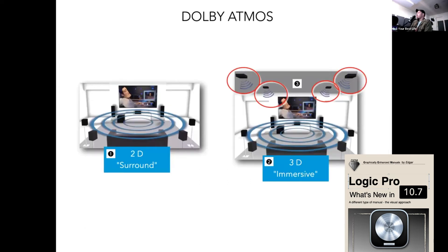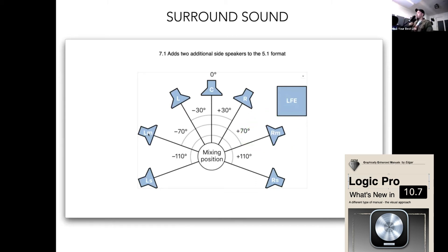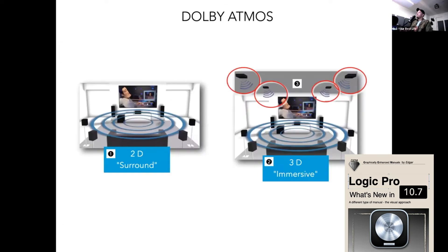These illustrations are all by Edgar Rothermich. We now have the ability to position sounds and listen to them in 3D space. In the old world, let's say we have a tambourine — I could only move it to the left or right middle. But by means of Dolby Atmos, we have 128 channels or positions to play sound.